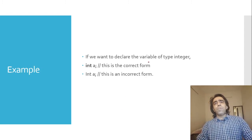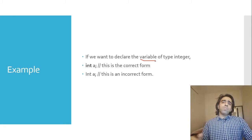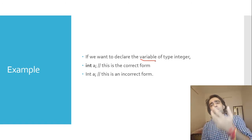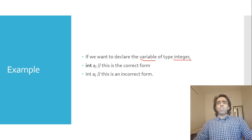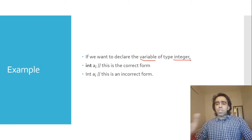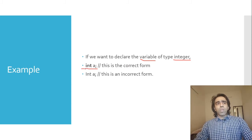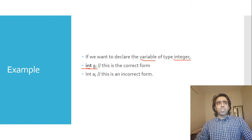For example, if we want to declare a variable of type integer, we use the keyword int. If we create an integer variable, we can store numbers. The correct form is: int a; — where 'int' is the data type, 'a' is the name of the variable, and semicolon is the termination symbol.